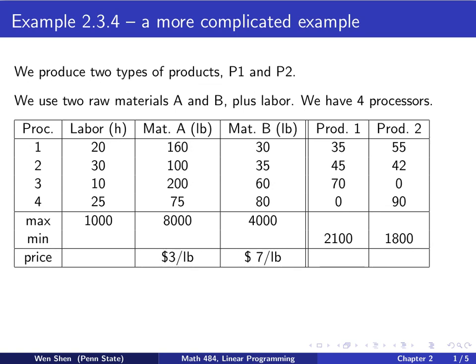For each processor, it is listed here how many hours of labor that's required. Processor 1 requires 20 hours of labor, 2 requires 30 hours, 3 requires 10 hours, and 4 requires 25 hours of labor. For each processor, there's also specified in this column the material type A that is required. 160 for processor 1, 100 for 2, 200 for 3, and 75 for processor number 4. The next column is similar for material B. These are the numbers for the four processors.